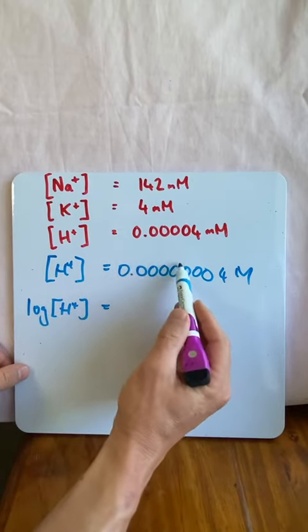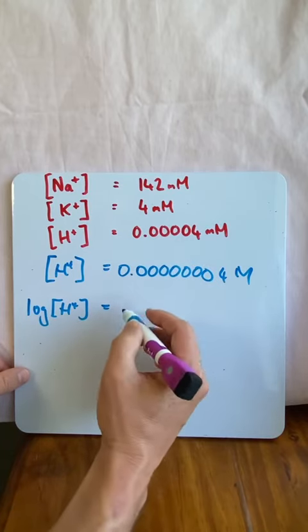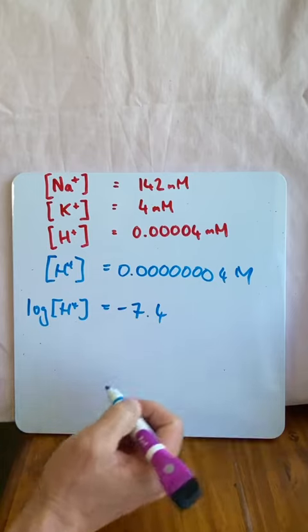it 1, 2, 3, 4, 5, 6, 7 decimal places into the negative. And if you type it into your calculator, you get negative 7.4.